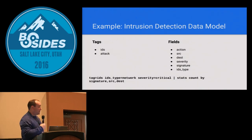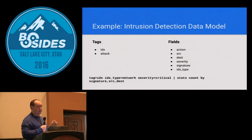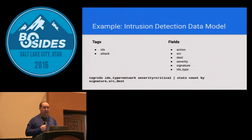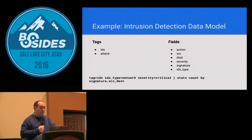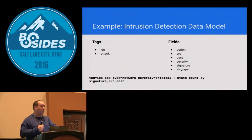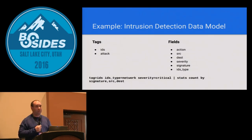Another example is IDS. This data model is primarily defined for intrusion detection events — network, host, and application — so that might include a WAF. Typical fields used are source, destination, severity, and the signature that was triggered, as well as IDS type. At the bottom I'm looking for IDS events that are network-based and critical across all my devices — a Palo Alto firewall, a Cisco firewall with IPS, a WAF, and endpoint IPS. This would search across all of those.